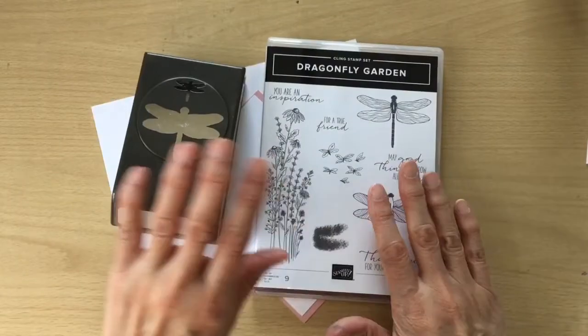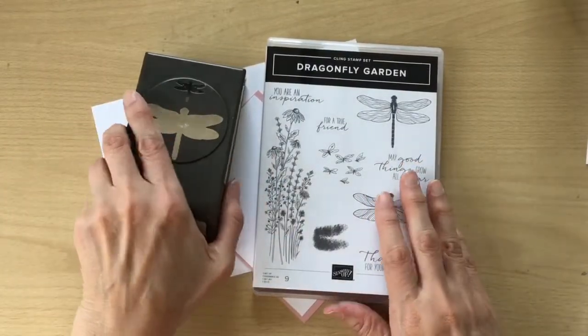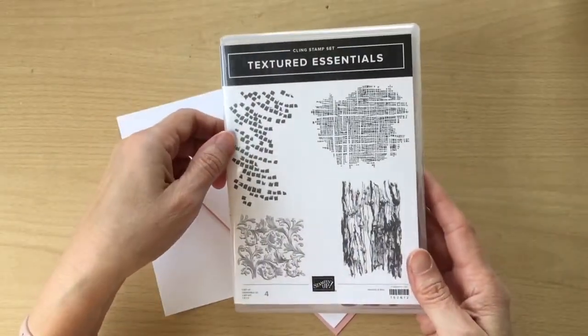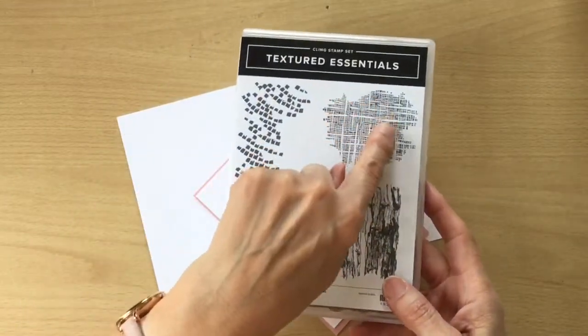So I'm going to be using stamps there, I'm going to be using my punch as well. I'm also going to use textured essentials. I'm going to use this as a background stamp.